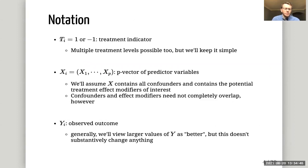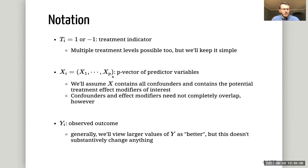Here we're going to let the treatment indicator take the value 1 for patients who are treated and negative 1 for patients who are not. The treatment can have multiple levels, but we're going to keep it simple here. X is going to be a length-p vector of pre-treatment variables, which contains all confounders and the potential treatment effect modifiers of interest. Confounders and effect modifiers don't need to completely overlap, but for simplicity we'll assume they do.